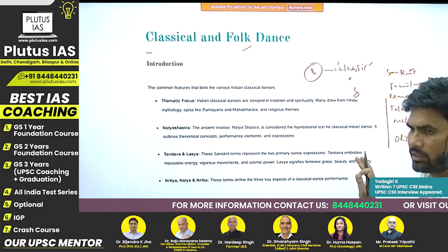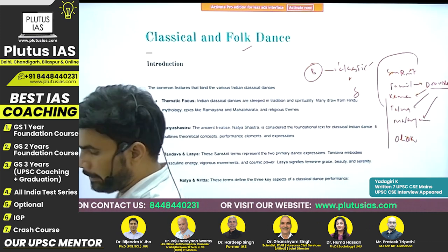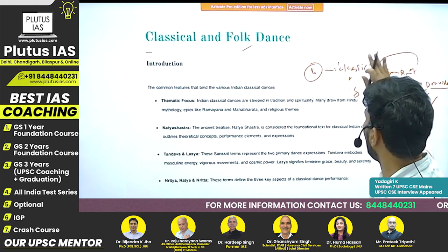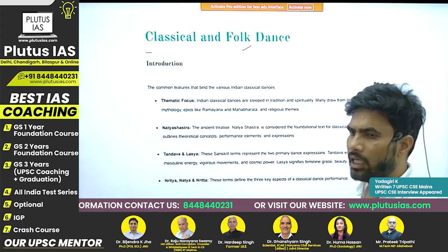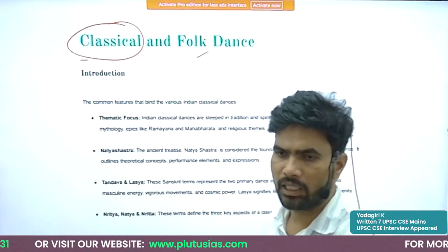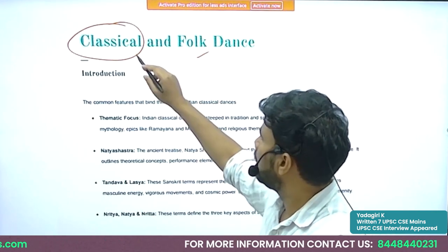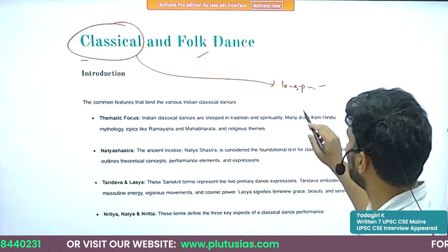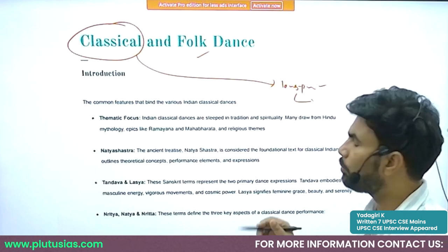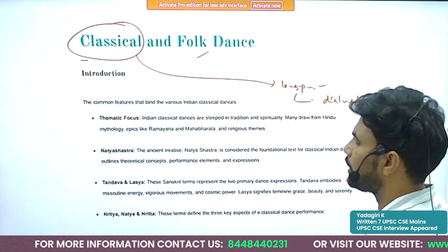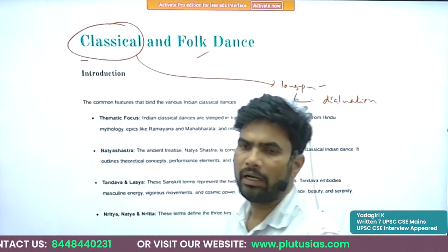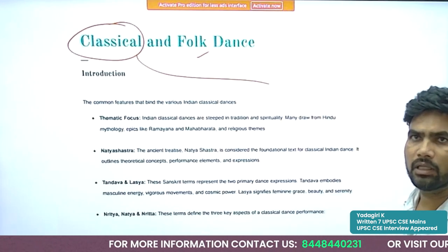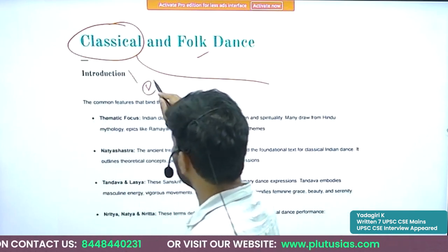That was about classical languages. There are certain conditions based on which classical language status is conferred on a language. Coming back to classical dances, one characteristic feature of 'classical' is that the tradition must exist from a long period of time, continue without much dilution for several years, and should have faced some threats.